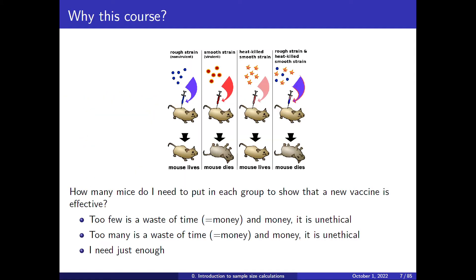So why this course? Let's say you are developing a new vaccine and you want to show that it is effective. You will use some mice, infect them, expose them to the virus, and see if they get infected or how sick they get. If you use too few animals, it is a waste of time and money — and also unethical, because you are doing bad things to animals that will ultimately not help show that the treatment is effective.